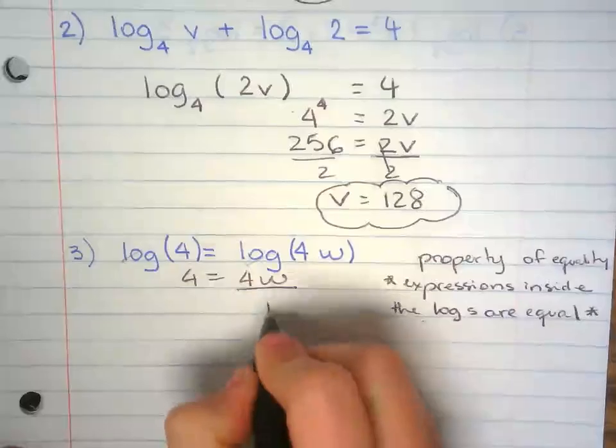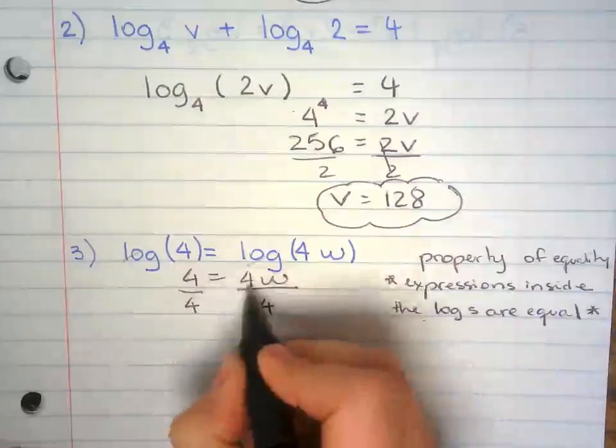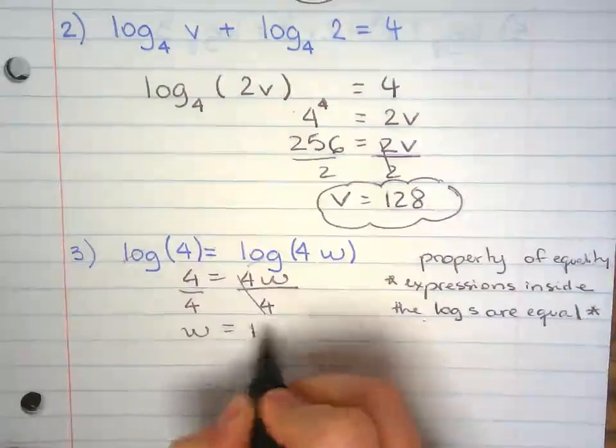Now we solve. Divide both sides by 4, w equals 1.